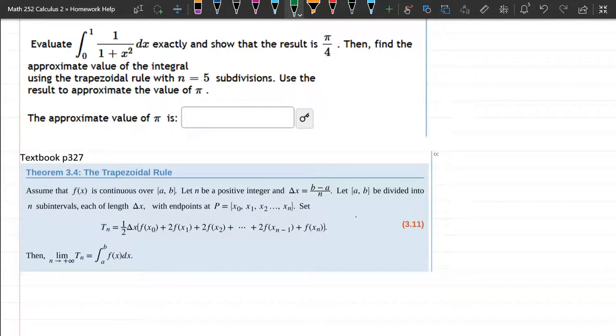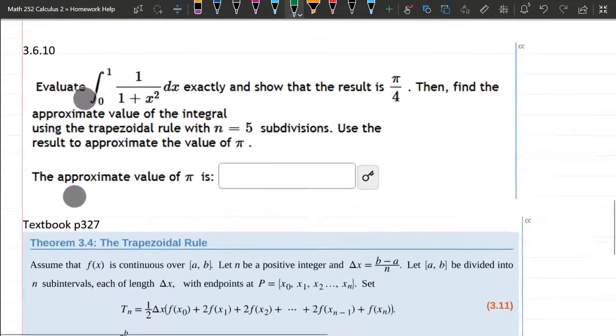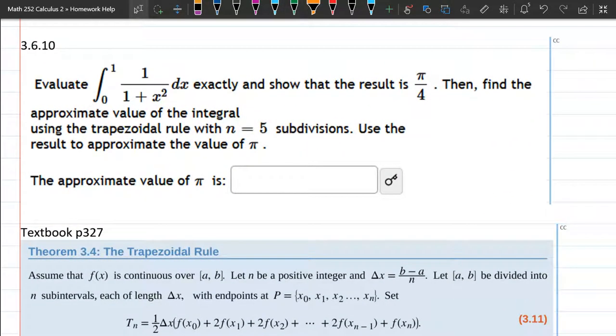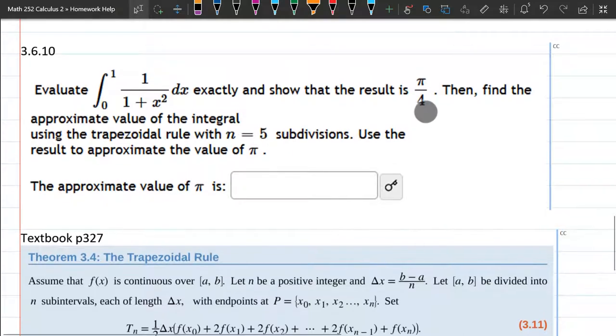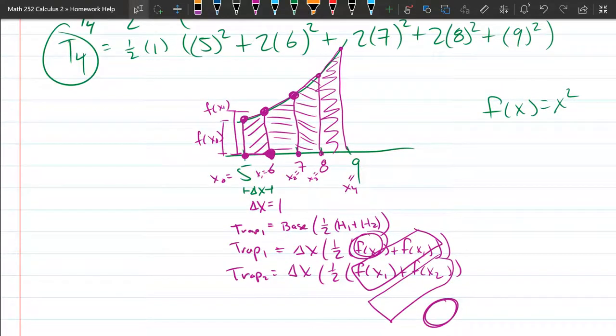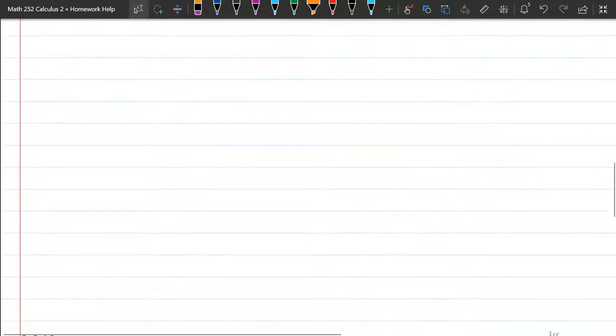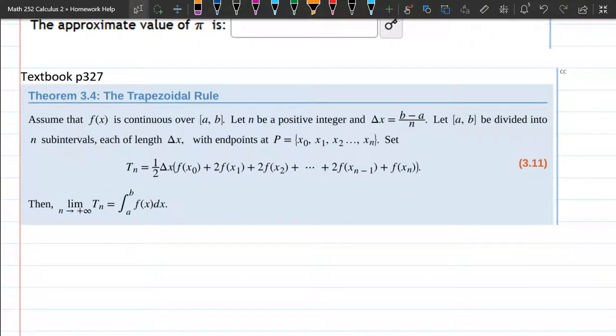We're going to evaluate an integral. I'm not going to do this exactly—you should be able to do this exactly. This is a very easy antiderivative if you know which one it is. This is an inverse tangent antiderivative, and you can look that up in your table, which I strongly recommend for practice. Then you plug in the endpoints like you've done before. What we're going to do is use the trapezoid rule with n equals five subdivisions. I have that drawn out up here, so I'm not going to go over the trapezoid rule another time. We're just going to compute with it, and I have it written down here.